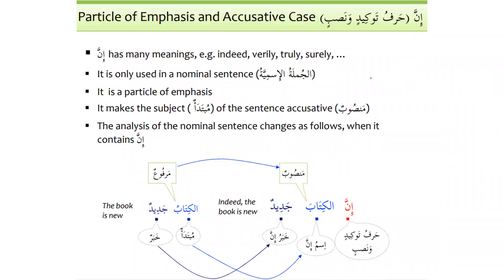Inna is a harfu tawqeedin wa nasbin — a particle of emphasis and accusative case. It has many meanings: indeed, verily, truly, and surely. It is only used in a nominal sentence, aljumla tul ismiya. It makes the subject, the mubtadaun, accusative — mansoob. So the analysis of the nominal sentence changes when it contains inna.